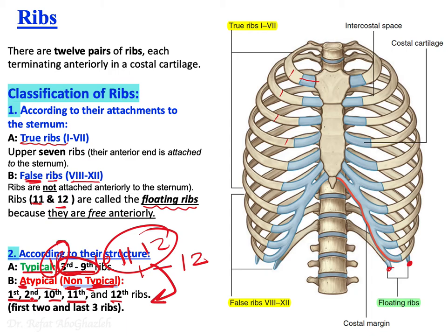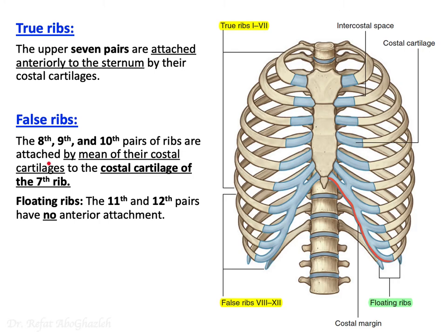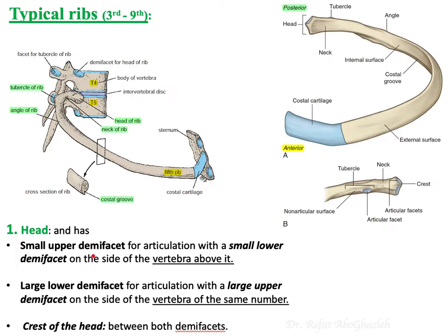Typical ribs, numbered three through nine, have specific characteristics. First, they have a head. The head articulates with the thoracic vertebrae posteriorly. The head has two demi facets: a smaller superior demi facet and a larger inferior demi facet, with a crest in between.